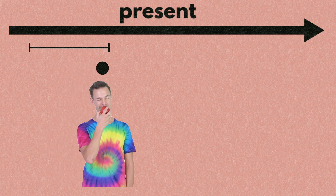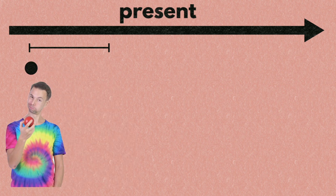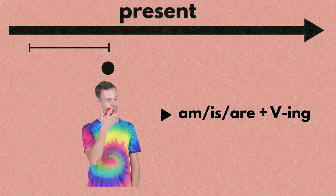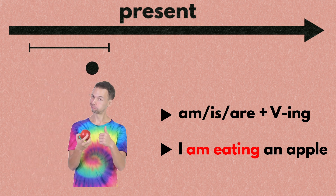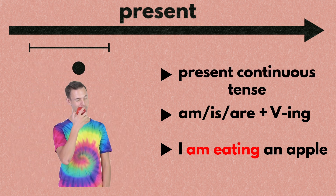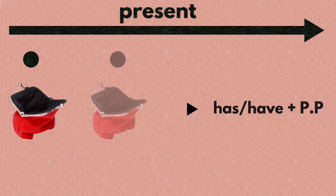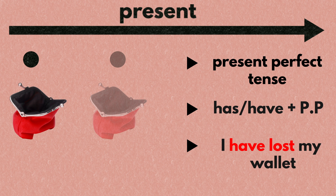If you're talking about something that is ongoing and unfinished at the present moment, put am, is, or are and add the ing form of a verb, as in I am eating an apple. This tense is called the present continuous tense. If something that happened in the past still has relevance in the present moment, put has or have with the pp form of a verb, as in I have lost my wallet. This tense is called the present perfect tense.